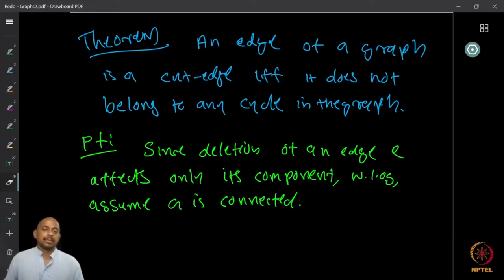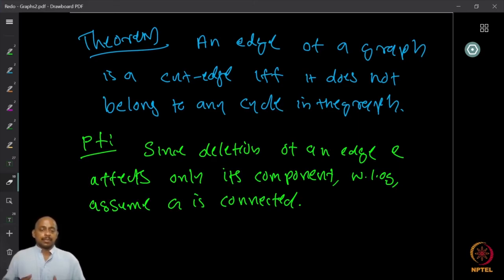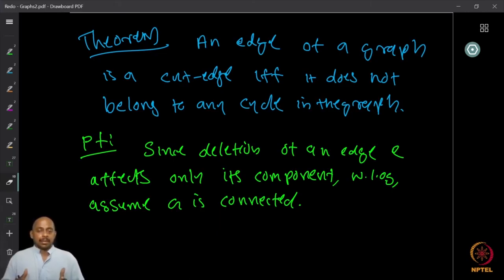We will prove this theorem that an edge is a cut edge if and only if it does not belong to a cycle. The deletion of an edge affects only its own component. So to prove this, we notice that if I delete an edge, the number of components increases only if the edge's own component has its component count increase — this edge cannot change the connectivity of any other component. Therefore, without loss of generality, we can assume G is connected.